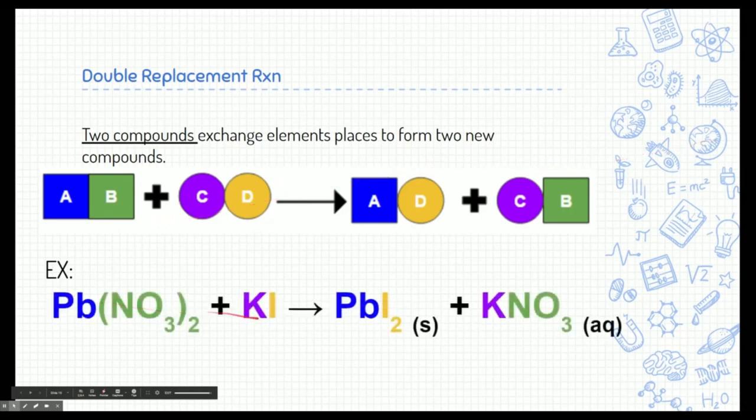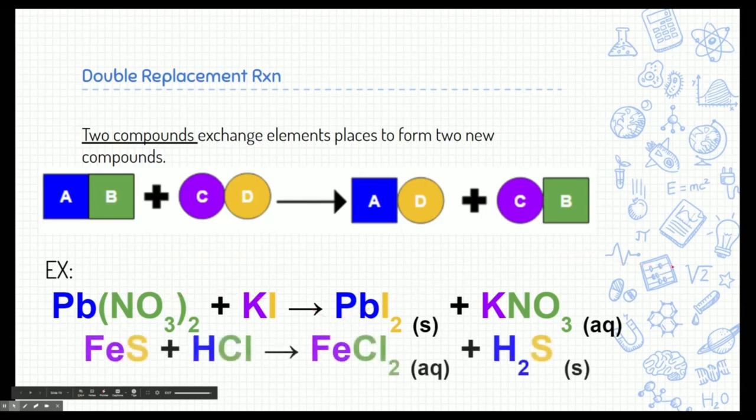Here's lead to nitrate and potassium iodine. Lead is going to go dance with iodine, and potassium is going to go dance with nitrate. Same thing. Iron 2 sulfide and hydrochloric acid both do a double replacement reaction, each switching their elemental partners.